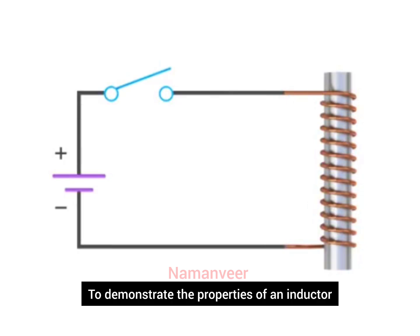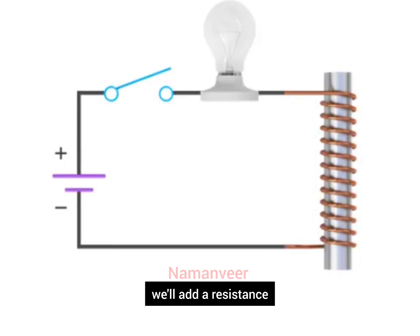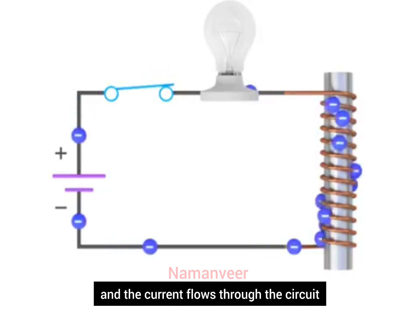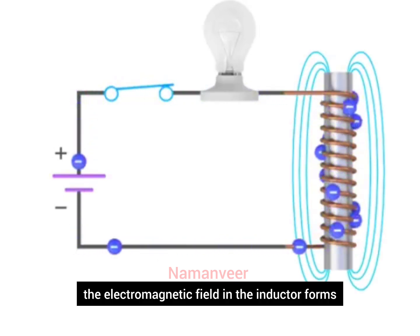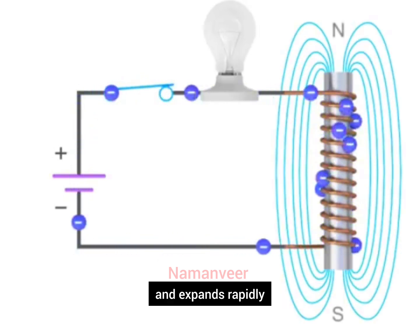To demonstrate the properties of an inductor, we'll add a resistance or light bulb to this circuit. As the switch is closed and the current flows through the circuit, the electromagnetic field in the inductor forms and expands rapidly.